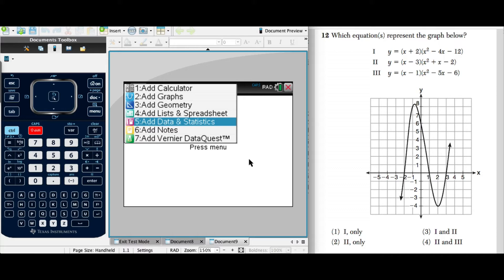Which equations represent the graph below? 1, Y equals X plus 2 times X squared minus 4X minus 12. 2, Y equals X minus 3 times X squared plus X minus 2.